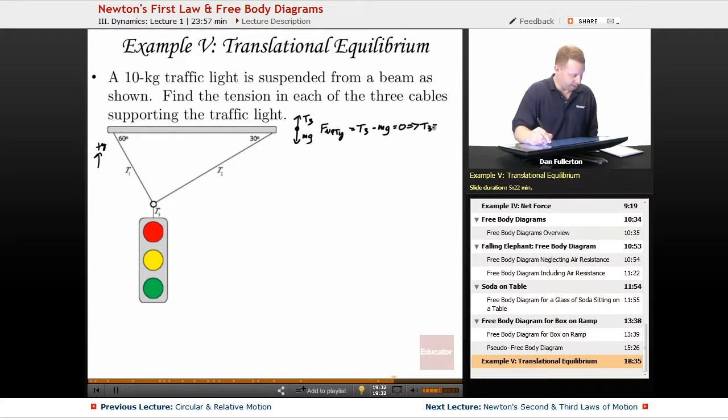Therefore I could state that T3 equals mg or T3 is going to be equal to m, 10 kilograms, times g, we'll round that off to 10 meters per second squared, or 100 newtons.